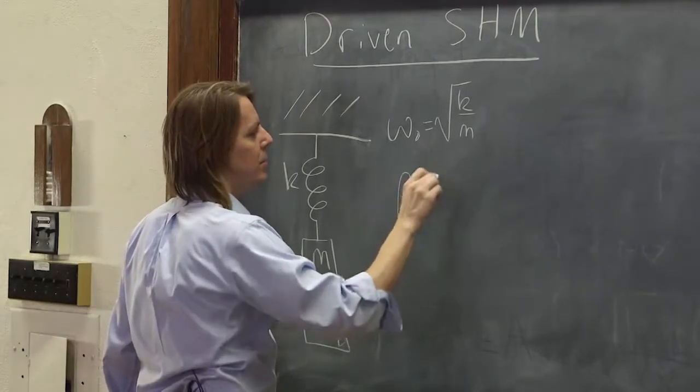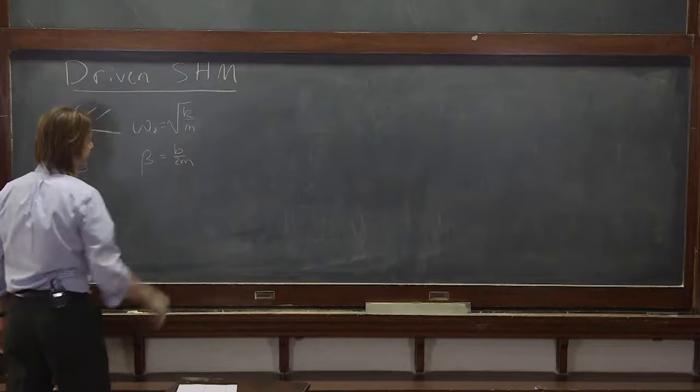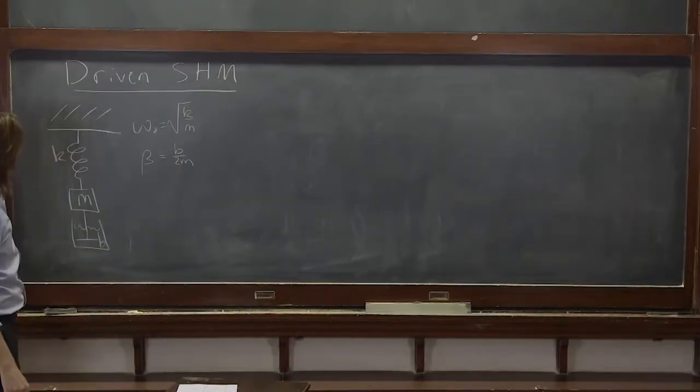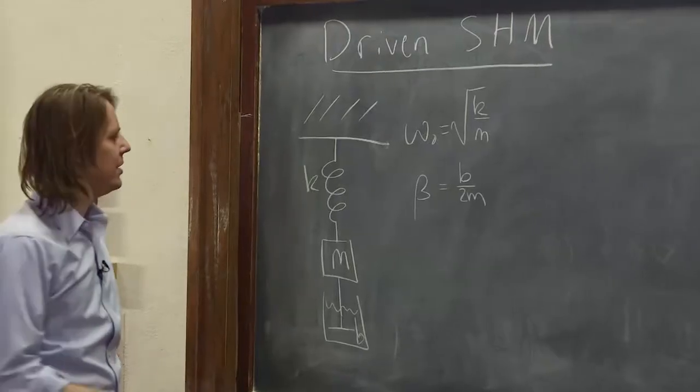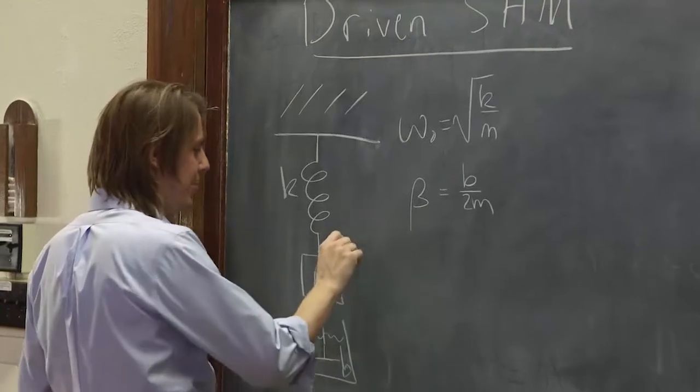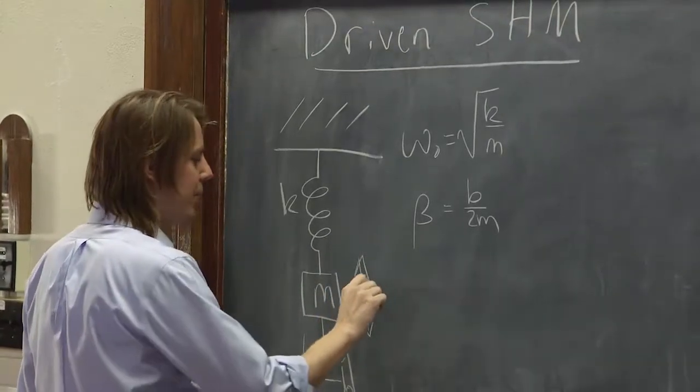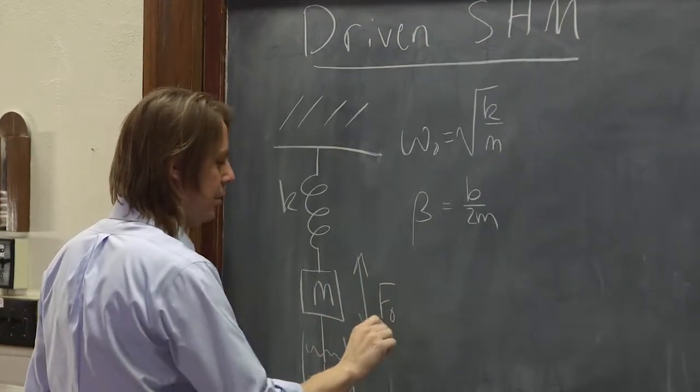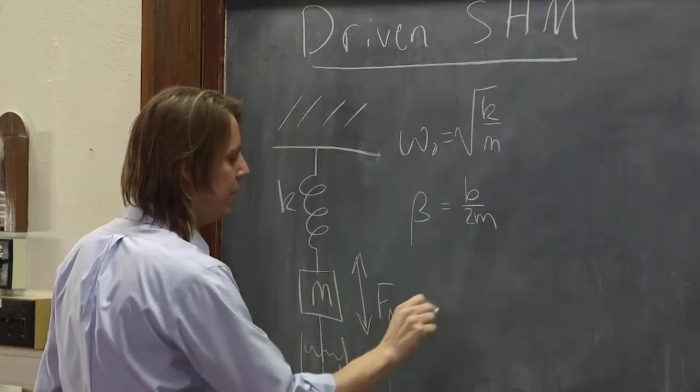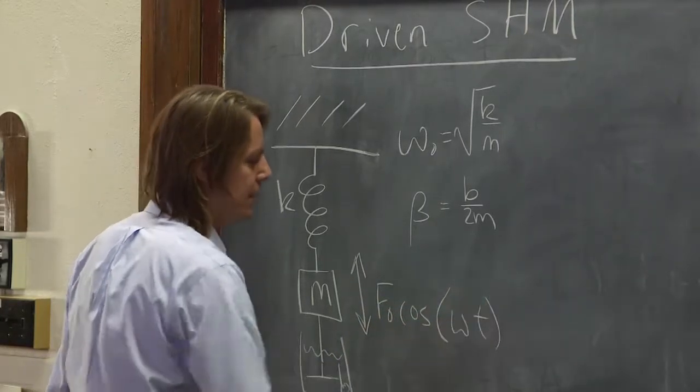And we have beta, which is b over 2m. We like to describe them that way. Now, if we're going to drive it, that means we are going to push it up and down. There's going to be another force, f naught, some amplitude, cosine omega t.